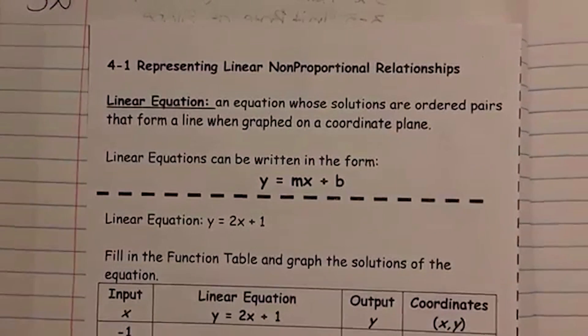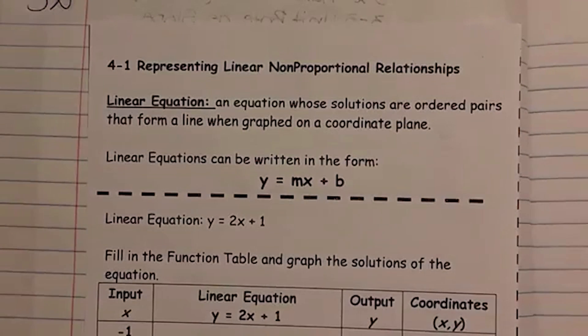Okay, we are going to talk about representing linear non-proportional relationships. Linear meaning that it's going to be a straight line. The reason it's going to be non-proportional is because it will not go through the origin if we graph it on a coordinate plane.